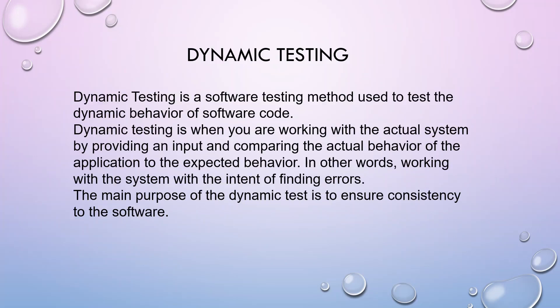Dynamic testing is a software testing method used to test the dynamic behavior of software code. Dynamic testing is when you are working with the actual system by providing an input and comparing the actual behavior of the application to the expected behavior. In other words, working with the system with the intent of finding errors. The main purpose of dynamic testing is to ensure consistency in the software.